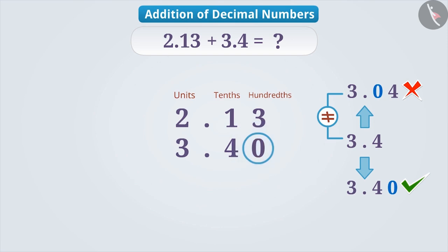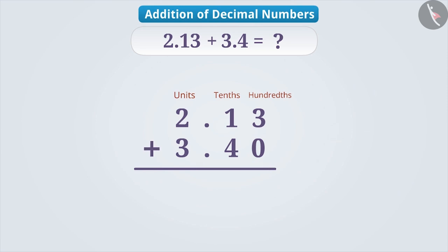Now, we have written the number one below the other, and with the help of 0, we have made the number of digits equal after the decimal point. We will add them the same way that we add whole numbers.